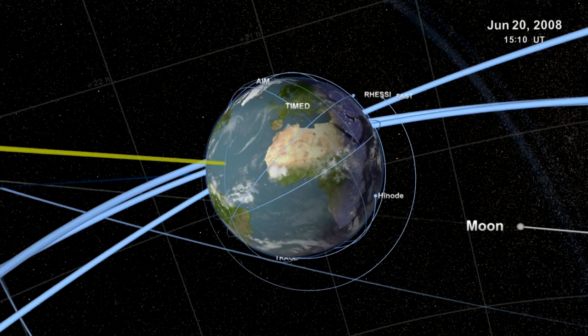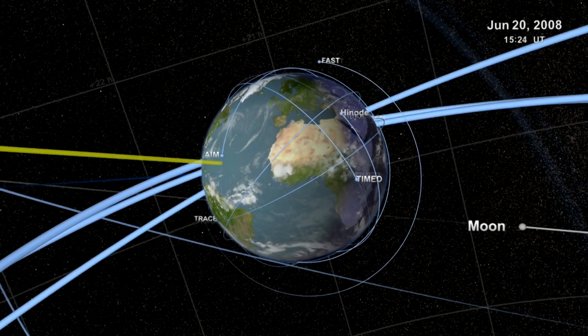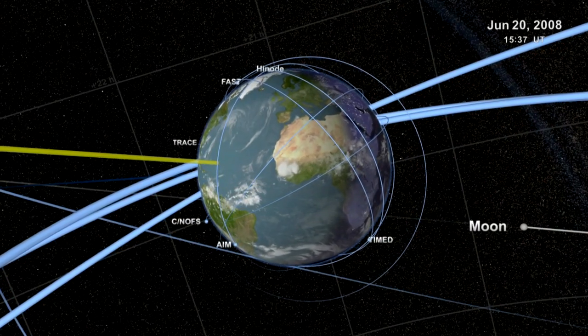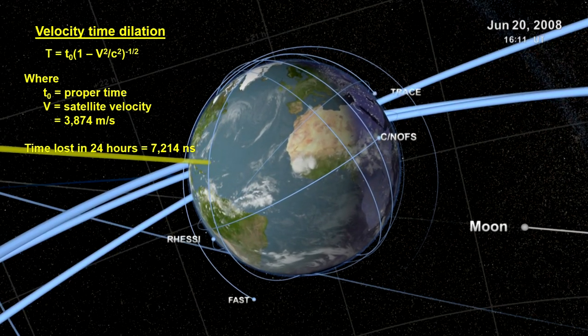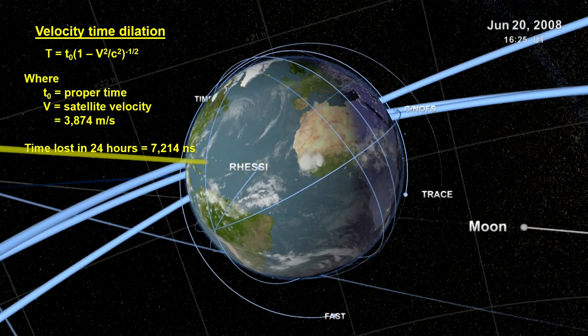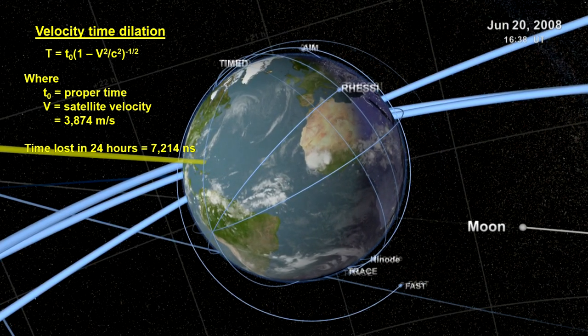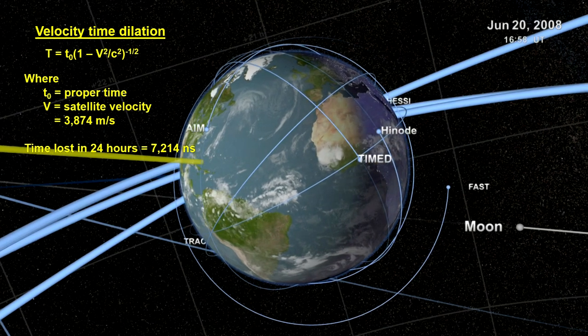We see this with our global positioning systems. In our segment on special relativity, we saw that time dilation due to velocity differences have GPS satellites losing time every day. Time that must be corrected for to get the right position on the surface of the Earth.